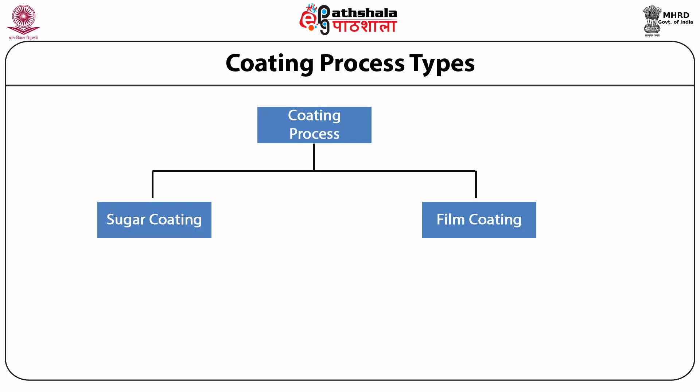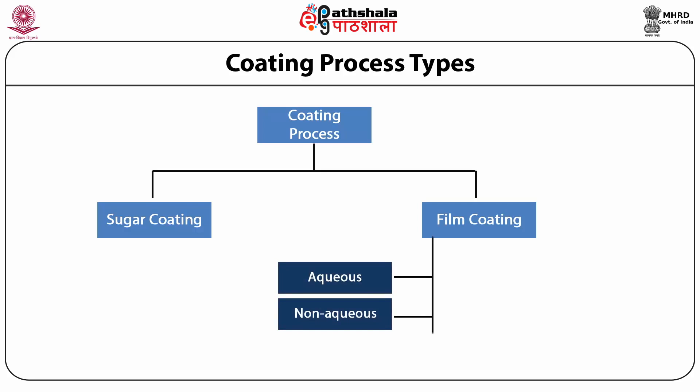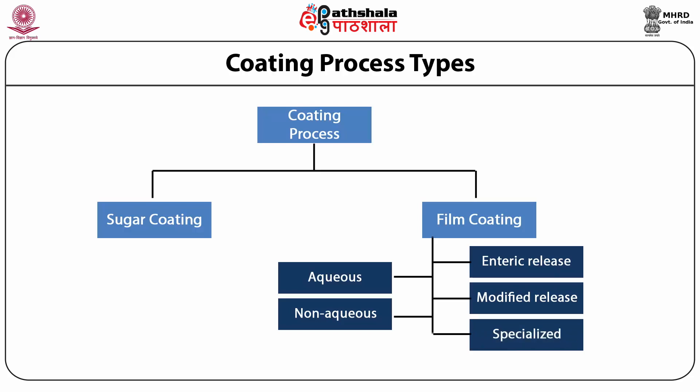Film coating is a single-stage process involving coating of a thin polymer layer onto the tablet core, usually by spray method. The thickness of film coating is between 20 and 100 micrometers. Film coating can be divided into aqueous or non-aqueous coating depending on the solvent used, and further into enteric, modified, or specialized coating based on the polymer's properties. The batch coating time is usually 1–2 hours and increases tablet weight by only 2–3%. Film coating retains the contour of the original core and tablets are usually not as shiny as with sugar coating.